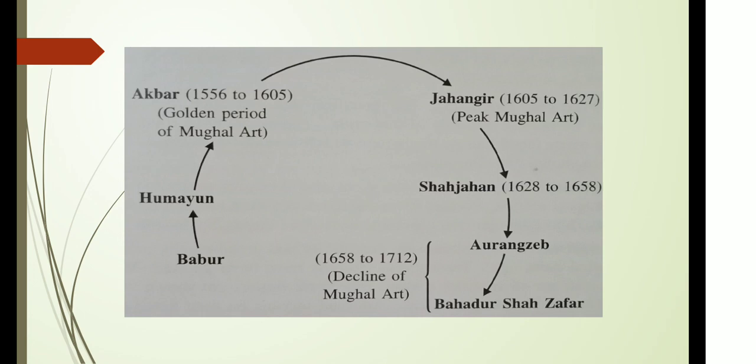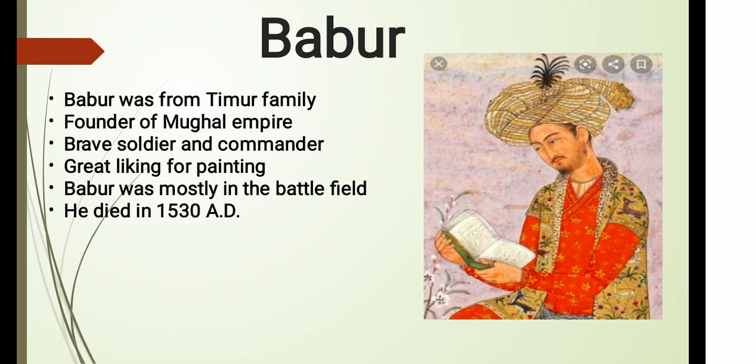The first one is Babur. Babur became emperor from 1526 to 1530. He was from the Timur family, founder of the Mughal empire in India. Babur was not only a brave soldier and an able commander — he also had a great liking for painting. Babur was mostly in the battlefield and died in 1530 AD.